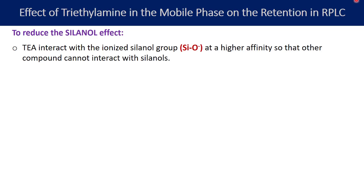What is the problem with the silanols? The silanol groups can also interact with protonated bases. The charge present on the silanol groups is SiO⁻, and the charge present on the protonated base is always positive. So this negative charge on the silanol can attract the positive charge on the basic compound. Because of that, the basic compound will certainly interact with the silanol groups also. Your intention is to have separation partitioning happening with the C8 or C18 functional groups, but the silanol groups will also contribute to the retention of the protonated basic compound — this is called the secondary effect.